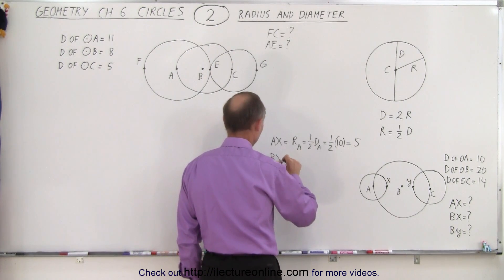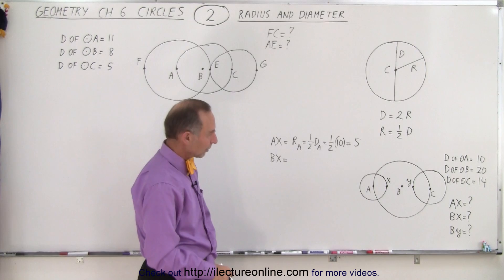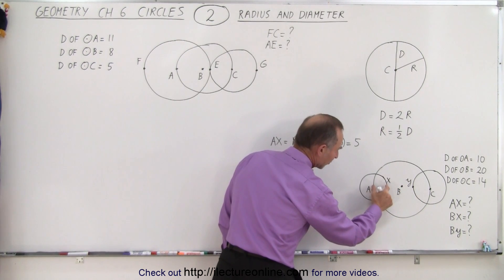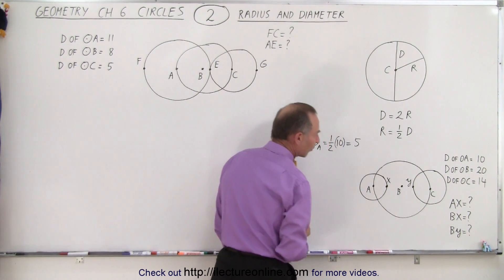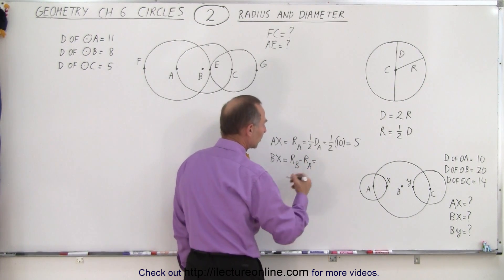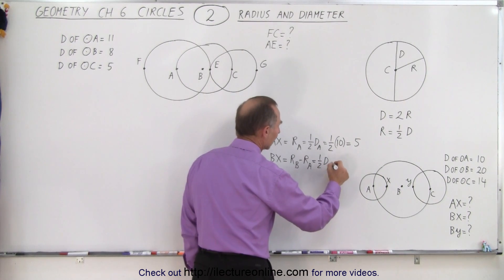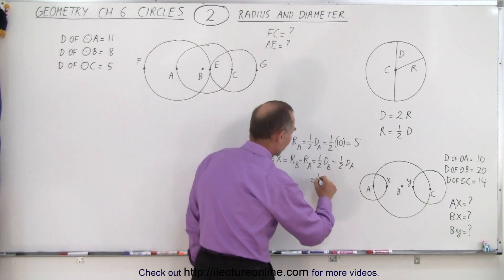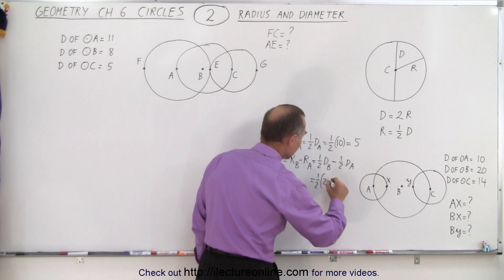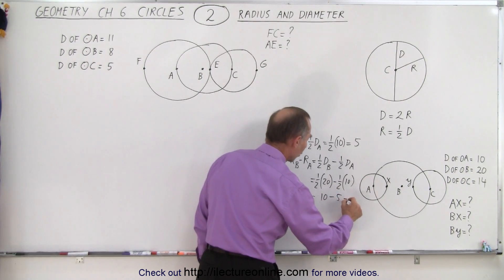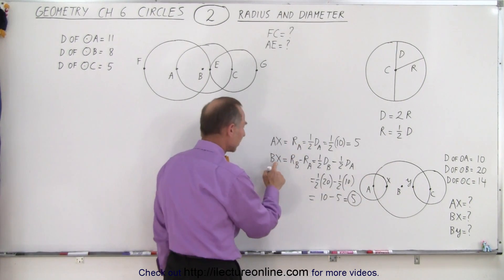How about the distance from B to X? That would be the distance from B to A, which is the radius of B, minus the distance from A to X, which is the radius of A. So this equals the radius of B minus the radius of A, which is one-half the diameter of B minus one-half the diameter of A. That would be one-half of 20 minus one-half of 10, so 10 minus 5, which equals 5. So the distance from B to X is 5.